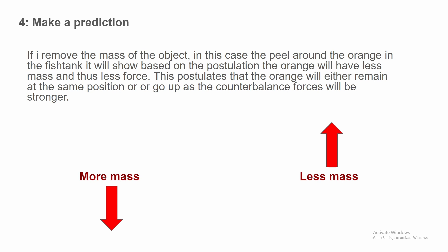Number four: Make a prediction. If I remove the mass of the object, in this case the peel around the orange, in the fish tank it will show, based upon the postulation, the orange will have less mass and thus have less attractive force. This postulates that the orange will either remain at the same position or it will go up as the counterbalance forces will be stronger. More mass means down to large mass. Less mass: same or goes up away from the large mass due to buoyant forces.